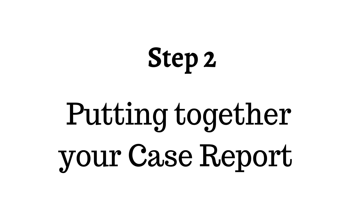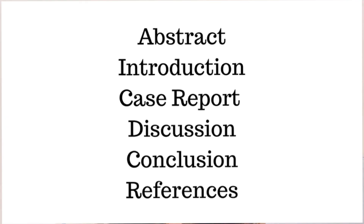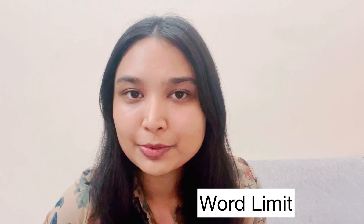Once you've done this, the difficult part is over. The next step is writing the case report — just putting it all together. These are the basic headings: abstract, introduction, case report, discussion, and conclusion. Each journal has its own format and you can alter it depending on where you submit, but these are the standard headings. The word limit for case reports is usually less than a thousand words, though some journals allow up to 1500 to 2000 words. It's important to keep it brief and include only extremely important and relevant points.